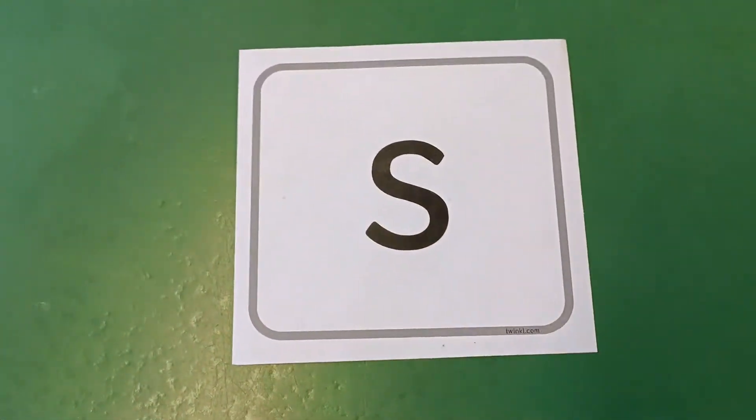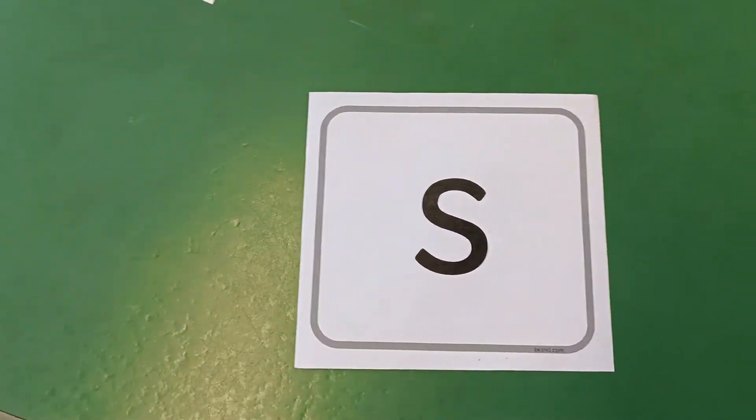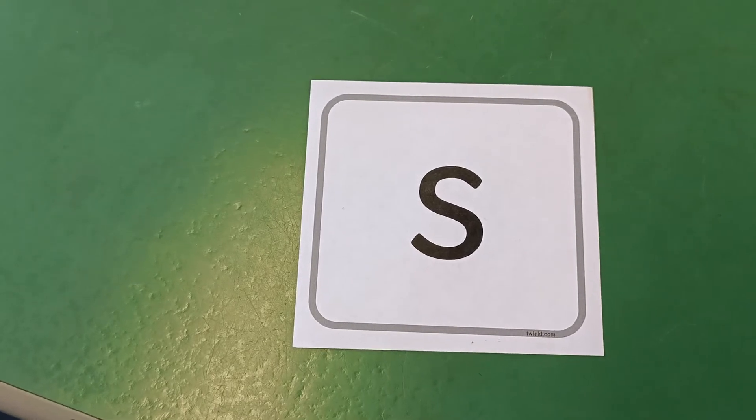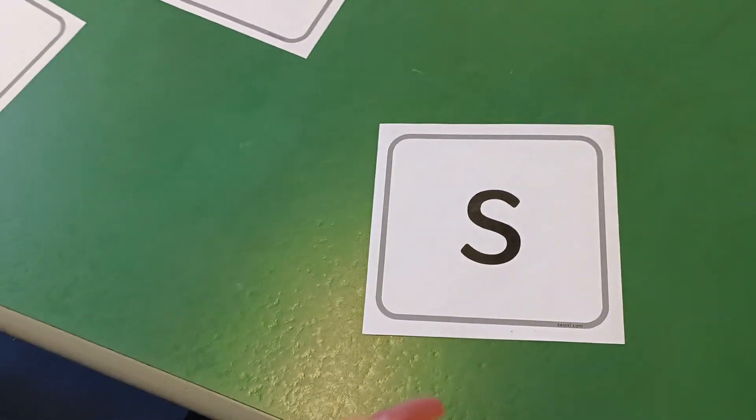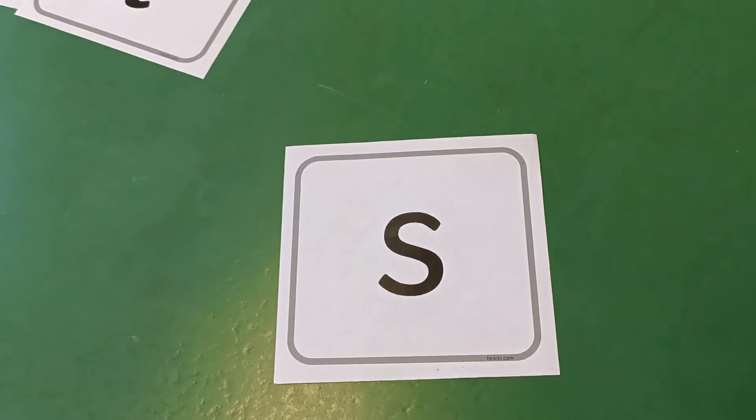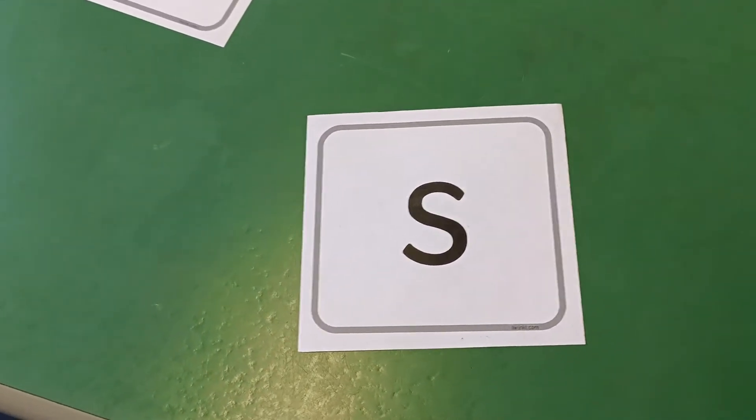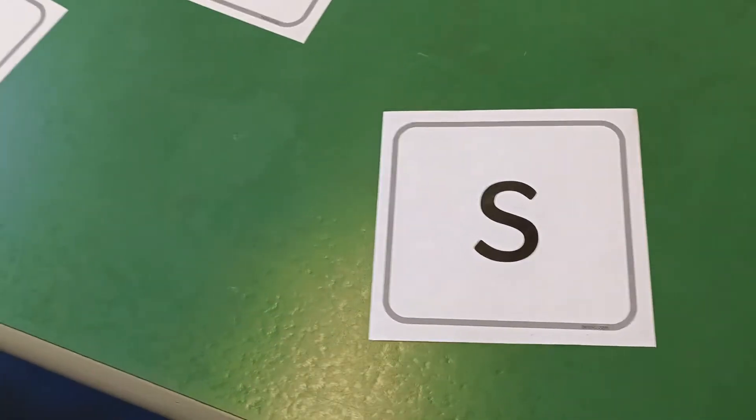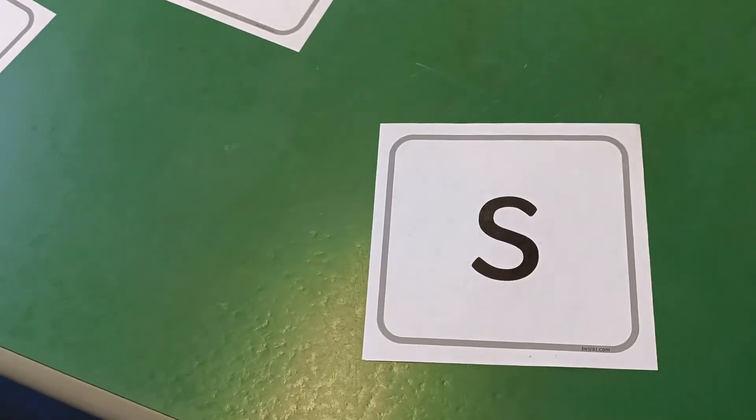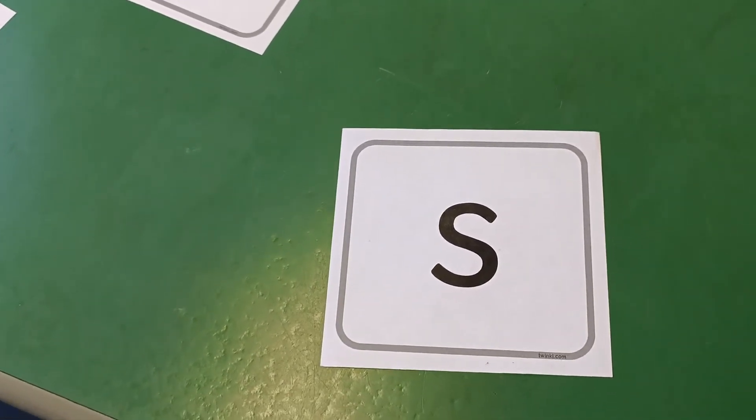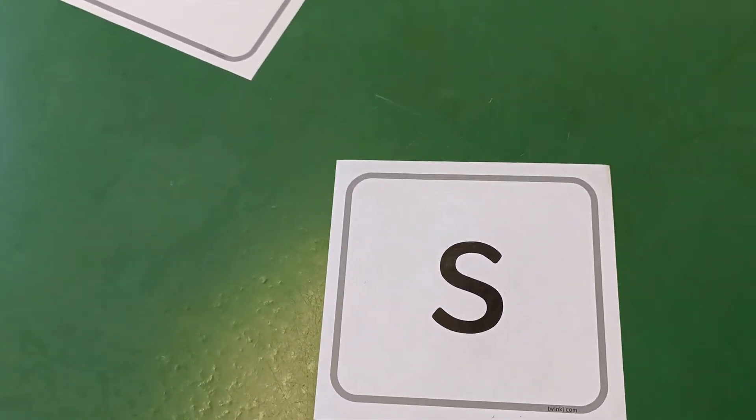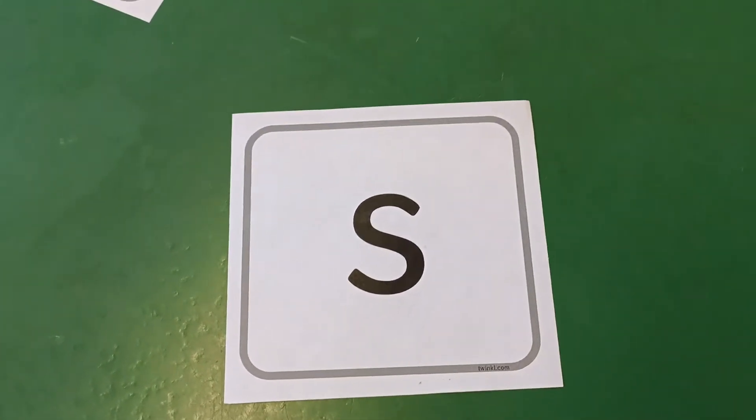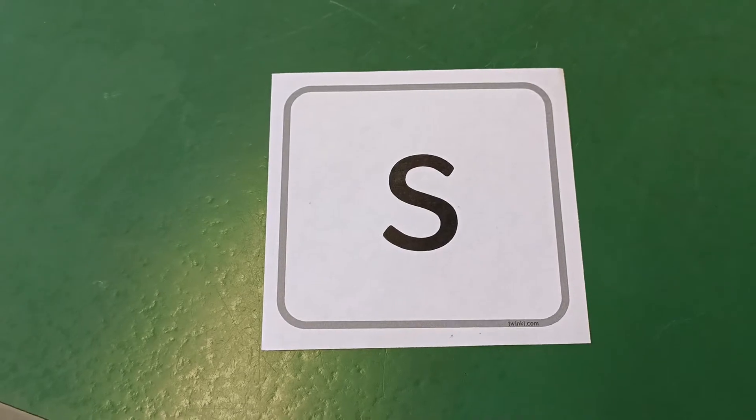So this is the first sound that we learn and it's the sound ssss. If you're hearing an uh on the end of it, if you're saying it like suh, that's not right. It's the single unit of sound that we need. So make sure when you're saying these sounds to your child that you're trying to say it with the smallest unit of sound. So this sound makes the ssss sound.